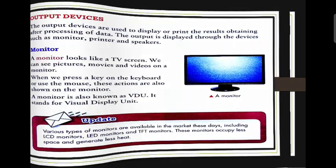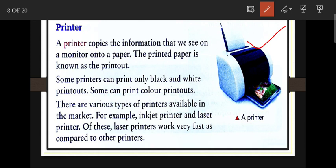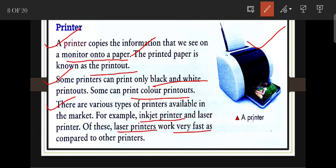Next is the printer. A printer copies the information that we see on the monitor onto paper — it does the opposite of a scanner. The printed paper is known as a printout. Some printers can print only black and white, and some can print in color. Types of printers include inkjet and laser printers. The laser printer works very fast compared to other printers.